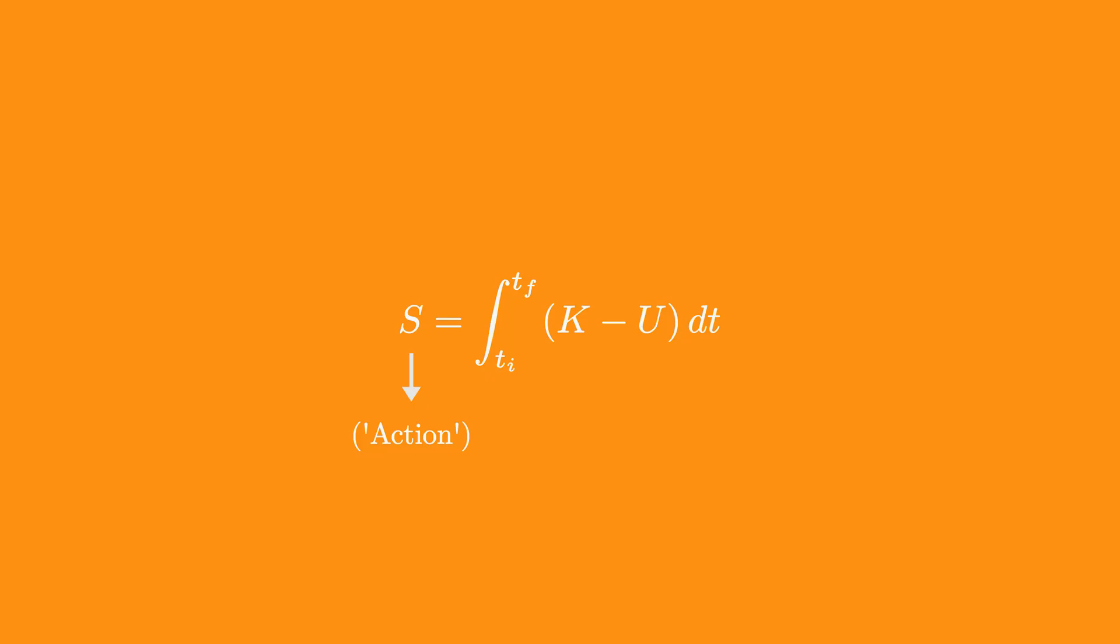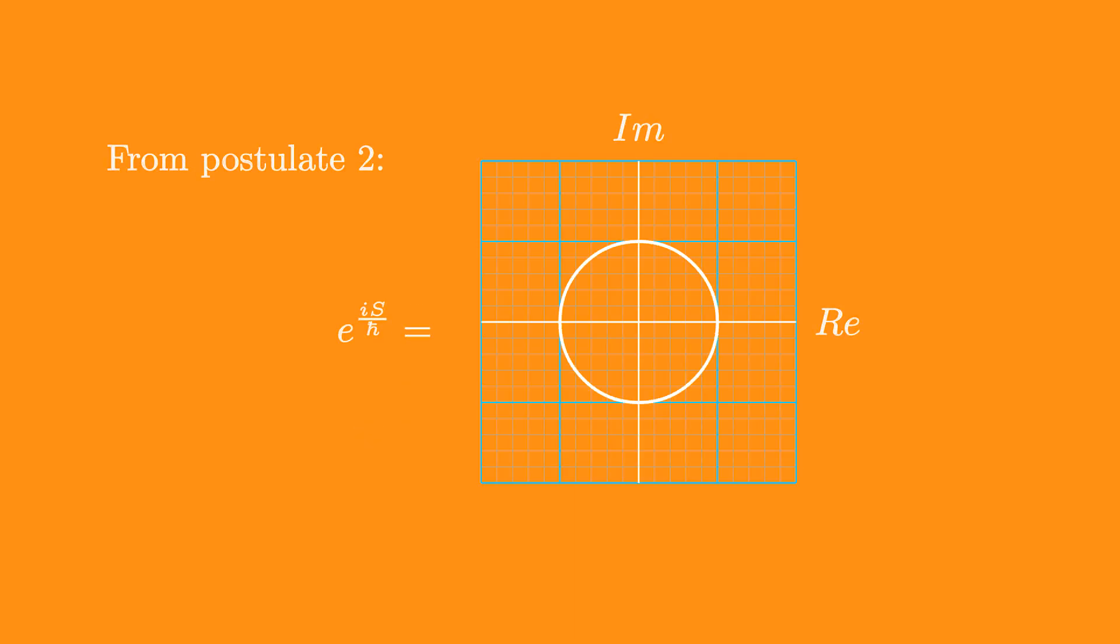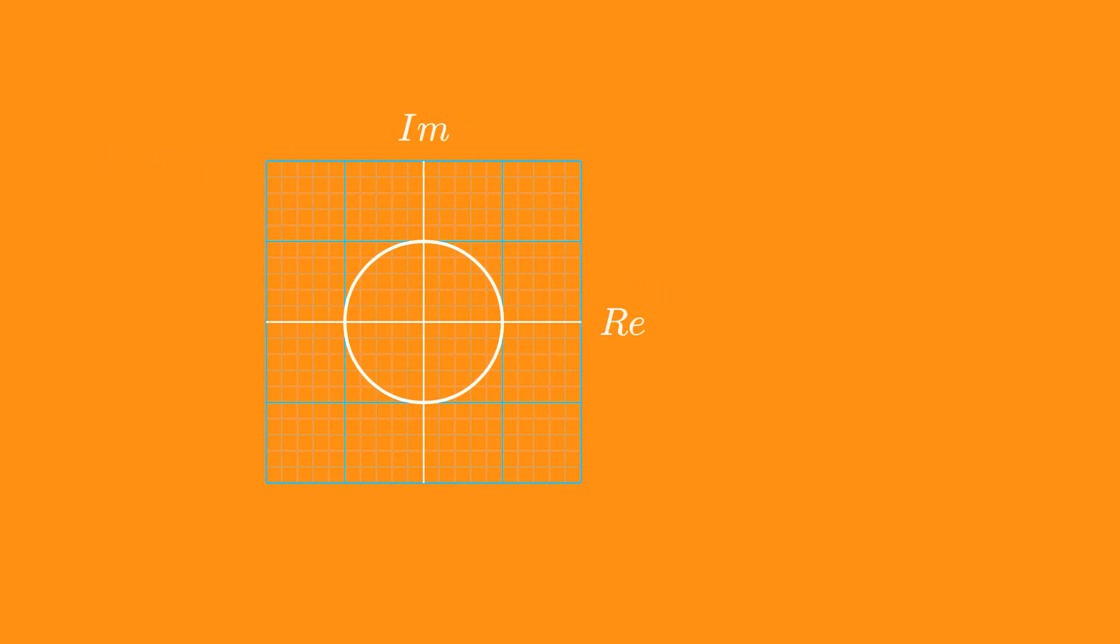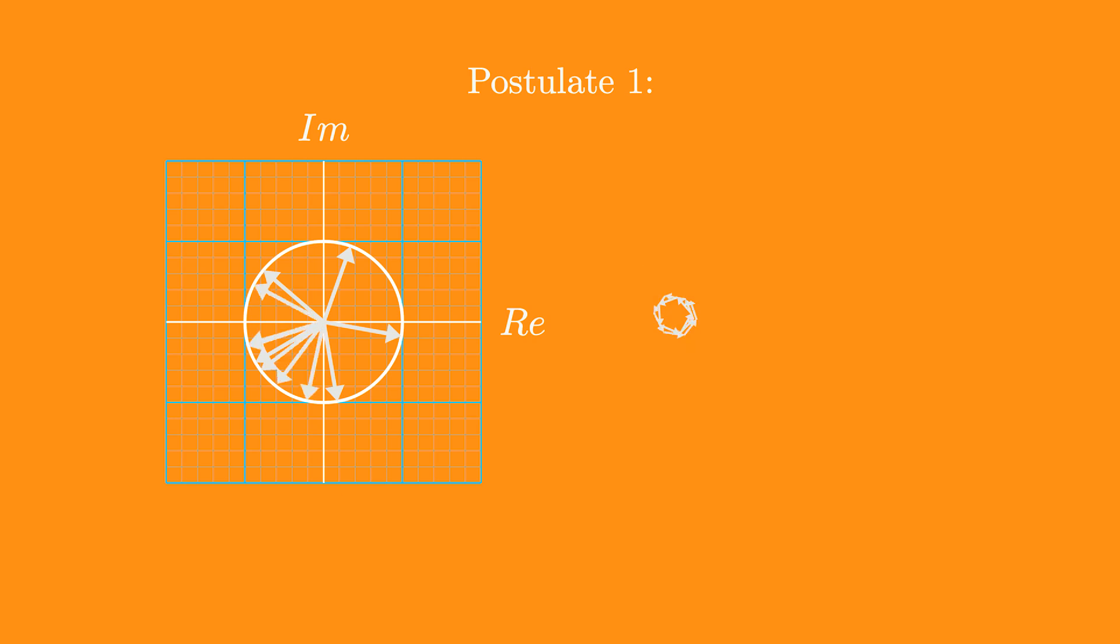Now, what are these postulates trying to say? All the complex terms can be imagined in the complex plane as terms having the same magnitude but different directions. Now, how do we get the total probability of a particle taking a path from this? Well, summing over all these arrows is essentially the same as connecting each arrow from tip to tail, and connecting the start and the end points gives us a remarkable result.